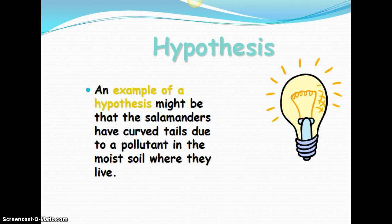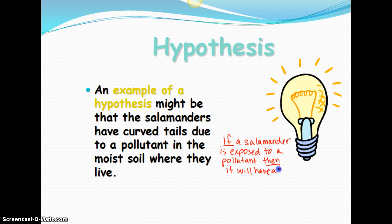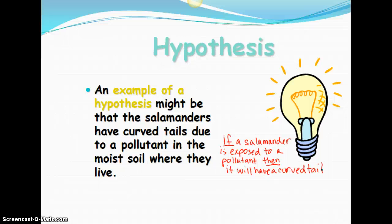So to clarify that a little bit for you, see if I can write that up there. If a salamander is exposed to a pollutant, then the result, it will have a curved tail. So we're kind of giving a solution or what we think is possibly happening. This is testable because we're saying that we can expose a salamander to a certain pollutant that's already in the soil. And then we can measure it. It'll have a curved tail.